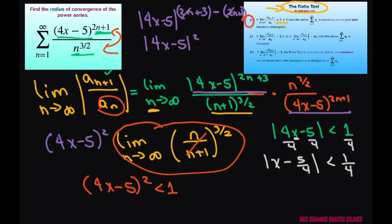Now for condition 2, it has to be greater than 1. So that would mean we'd have x minus 5 fourths is greater than 1 fourth. This is convergent, so I'm going to put converges. And this one is divergent, so I'm going to put diverges.